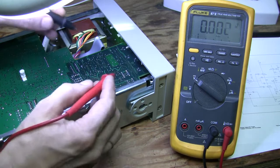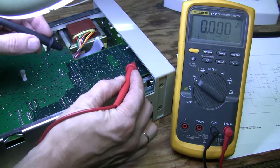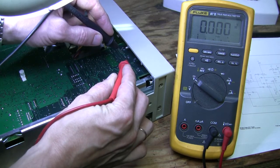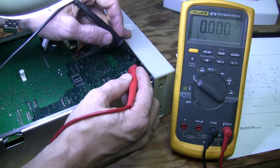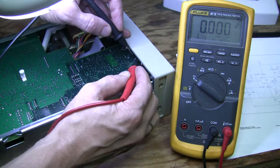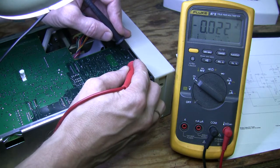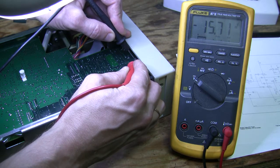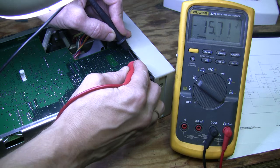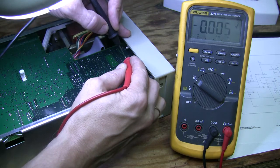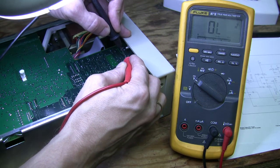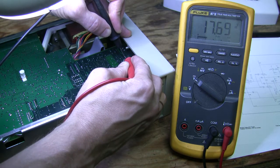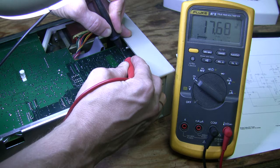Okay, so one electrolytic cap is soldered right here, another one is here. Let's start checking this one. This measures 15.71, which is okay. And on the other side, oh look at this, this is 17.69.